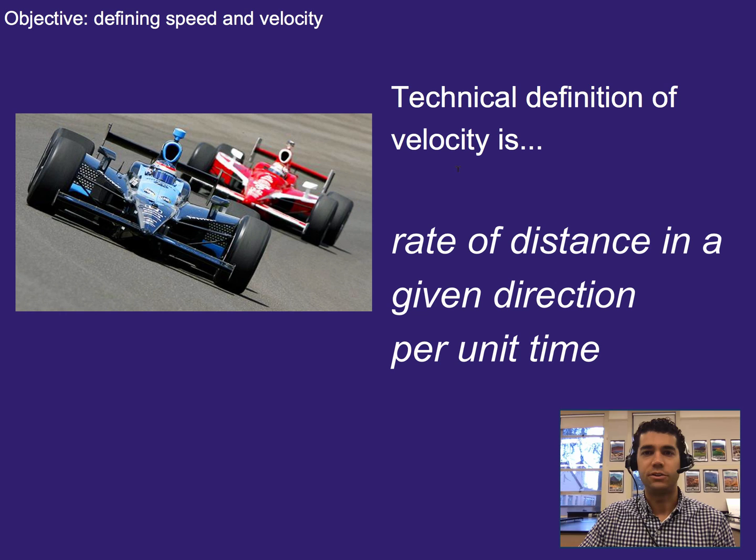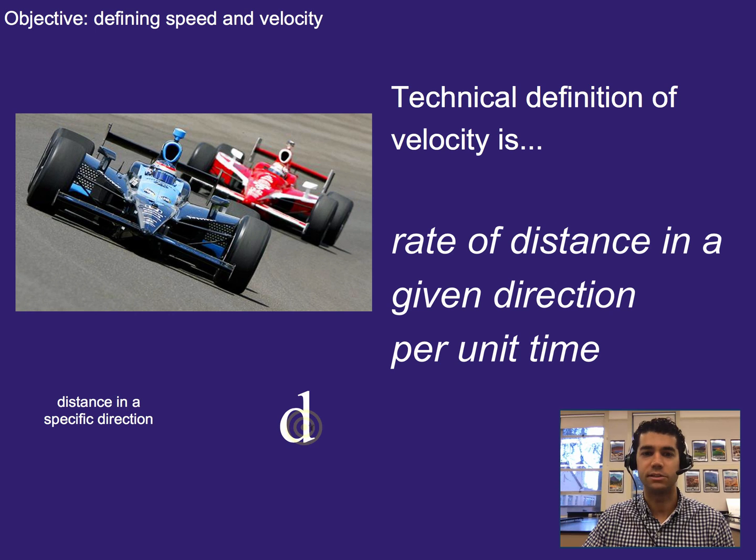Now, the technical definition of velocity is the rate of distance in a given direction per unit time. Later we'll talk about it as displacement, but for now, think of distance in a specific or given direction. If we start to look at our equation, that's going to come out to distance in a specific direction, per, which is our idea of the fraction bar, and then time, which will be in t.